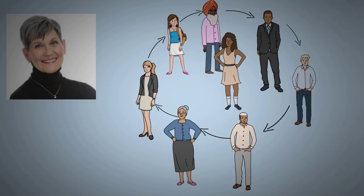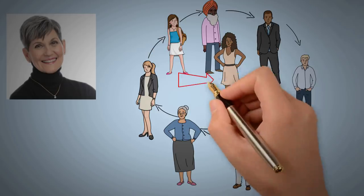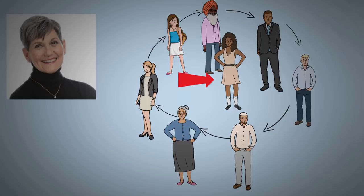Lynne McTaggart and her team divided a hundred volunteers, members of the experiment, into small groups of about eight, making sure that most were complete strangers. One of each group was asked to be the object of their group's intention. This one member should have some sort of physical or emotional condition.